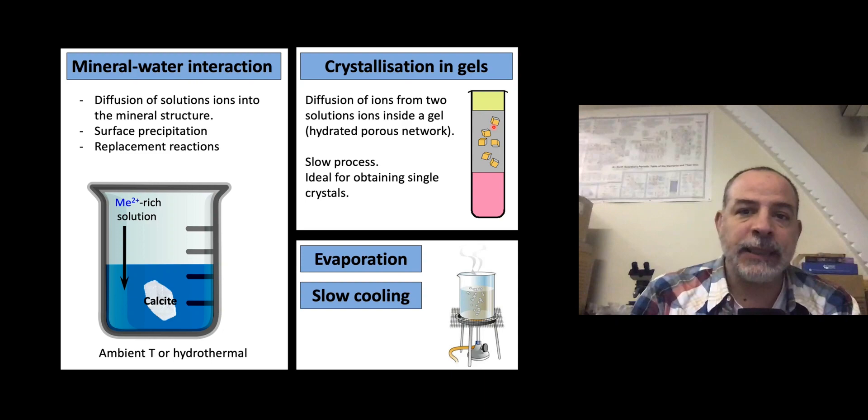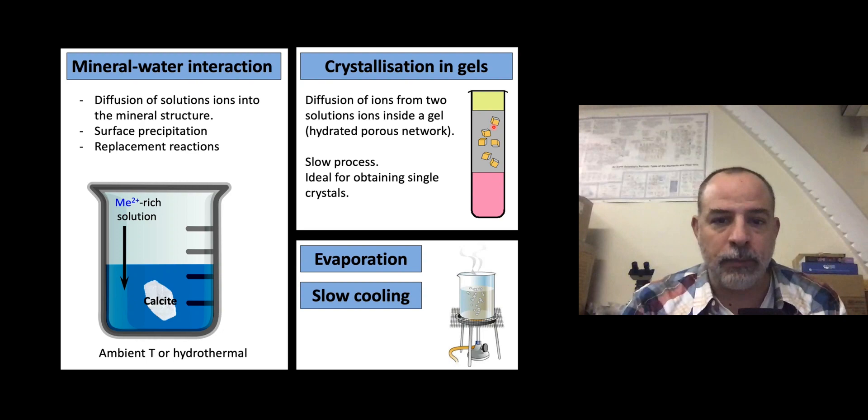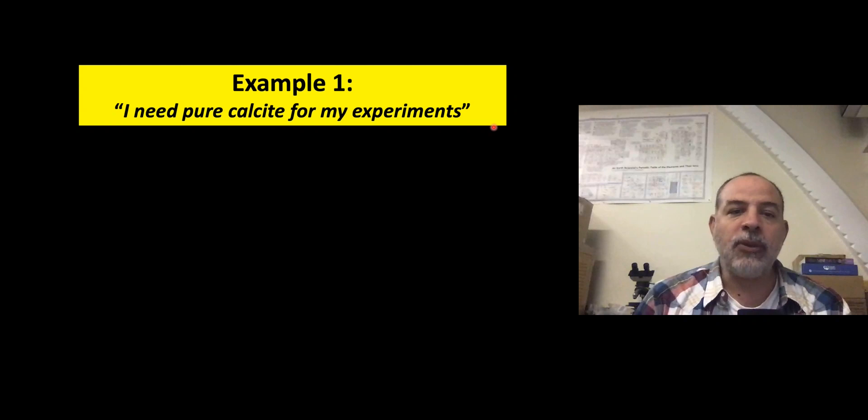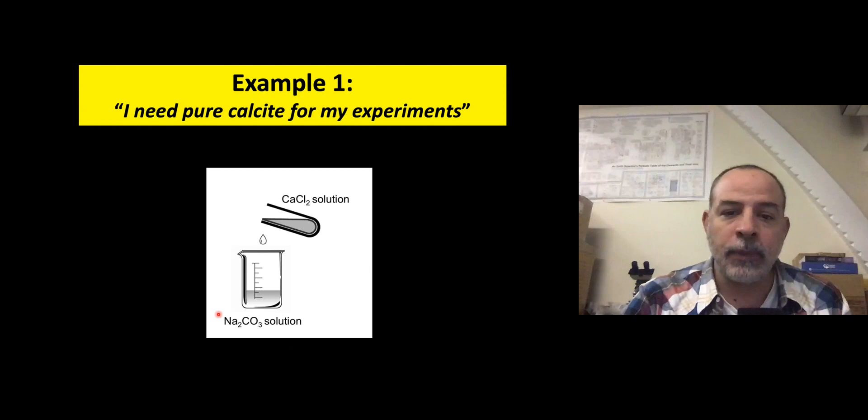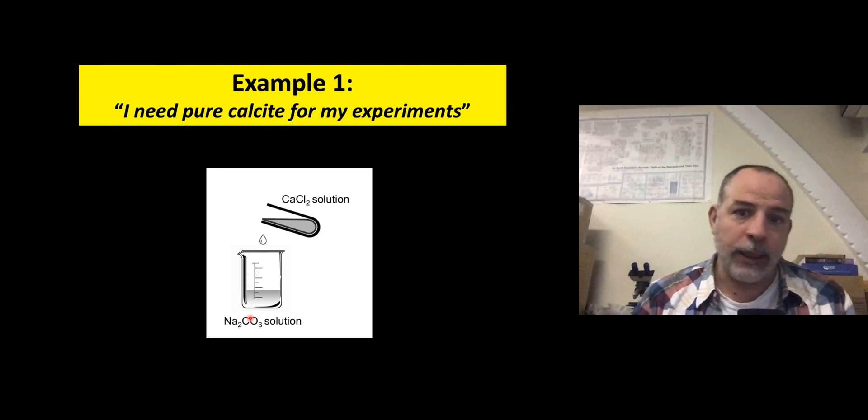Now I'm going to show you three examples to explain how complex this process can be. I'll start with calcite: what happens if you need pure calcite for your experiments? You might think it's very simple — just mix sodium carbonate with calcium chloride. You are going to produce pure calcite, but let me show you what potential outcomes you may have. I'm going to show you a graph considering three variables: the most important one, supersaturation, plus variations in pH and temperature.